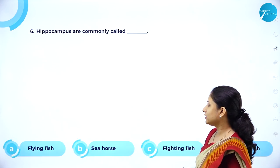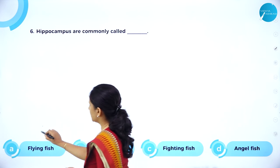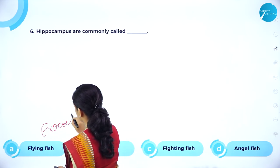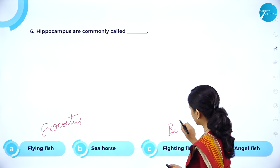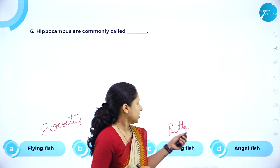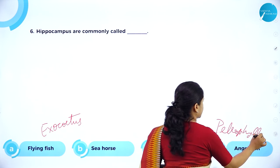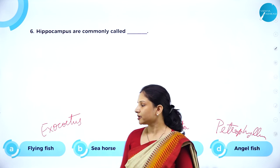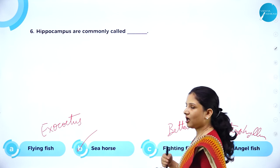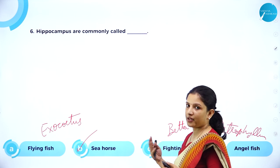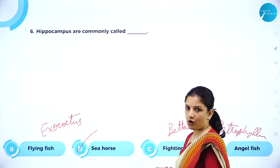MCQ: Hippocampus is commonly called — flying fish, seahorse, fighting fish, or angelfish? Flying fish is Exocoetus. Seahorse is Hippocampus. Fighting fish is Betta. Angelfish is Pterophyllum. So the right answer is seahorse, option B. Note that similar questions could be framed asking the common names of Exocoetus, Betta, or Pterophyllum.